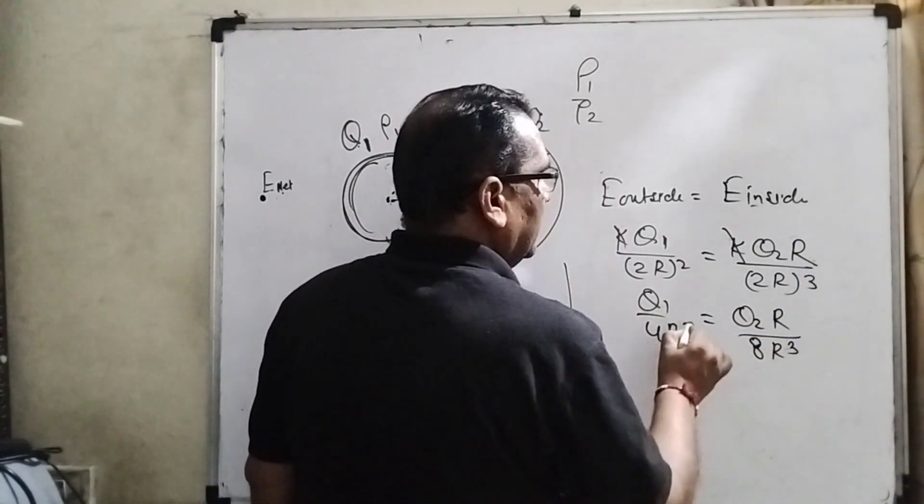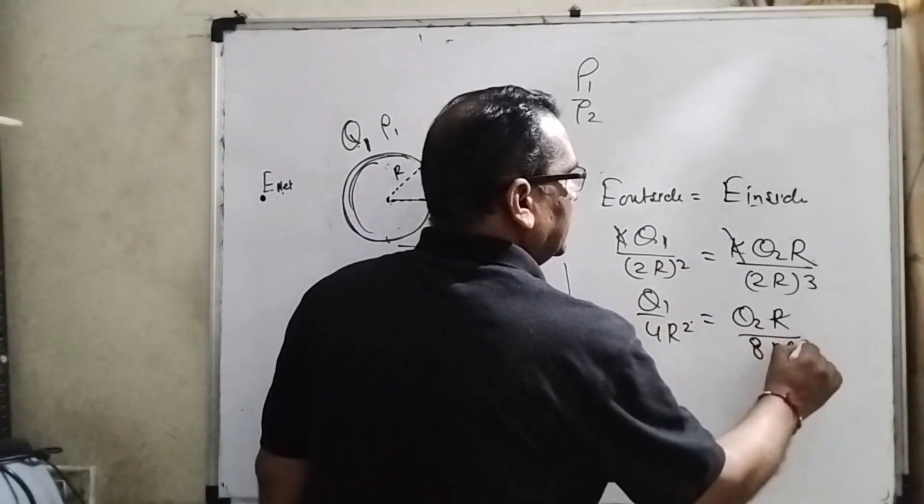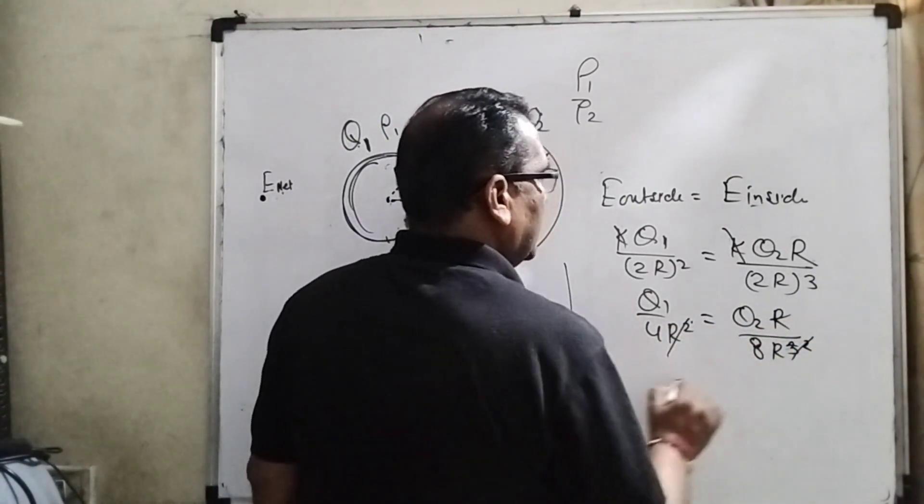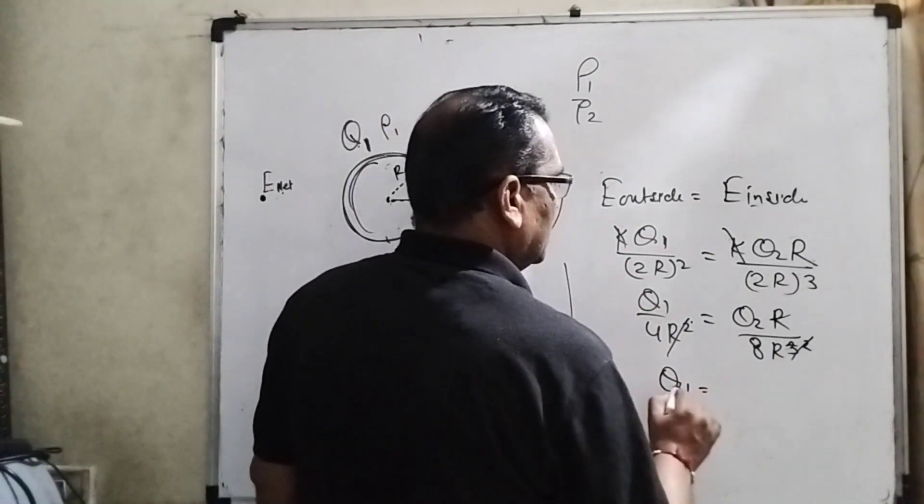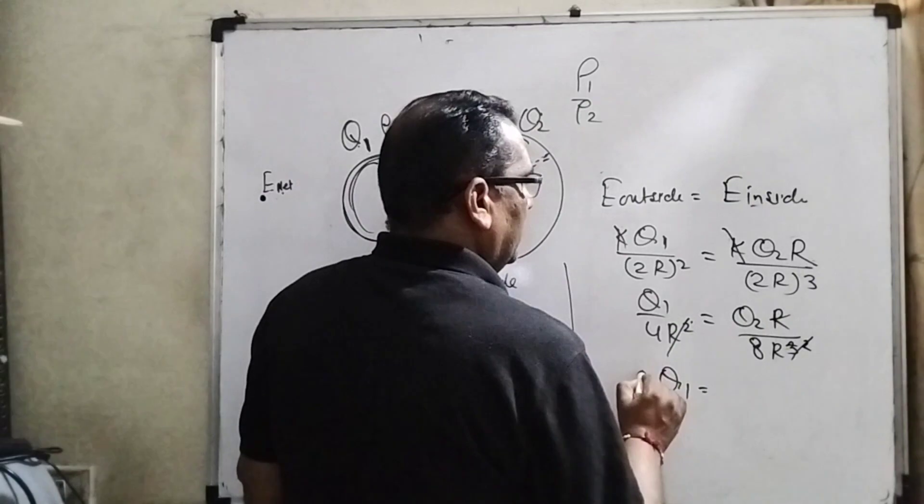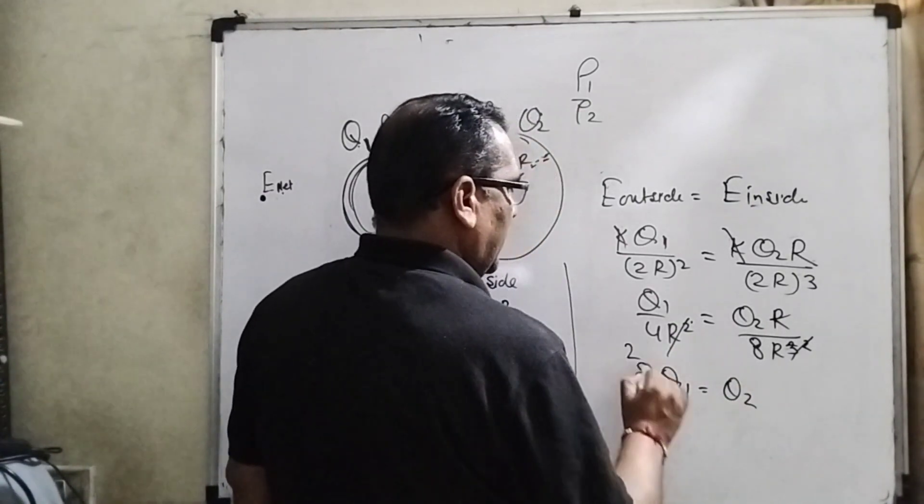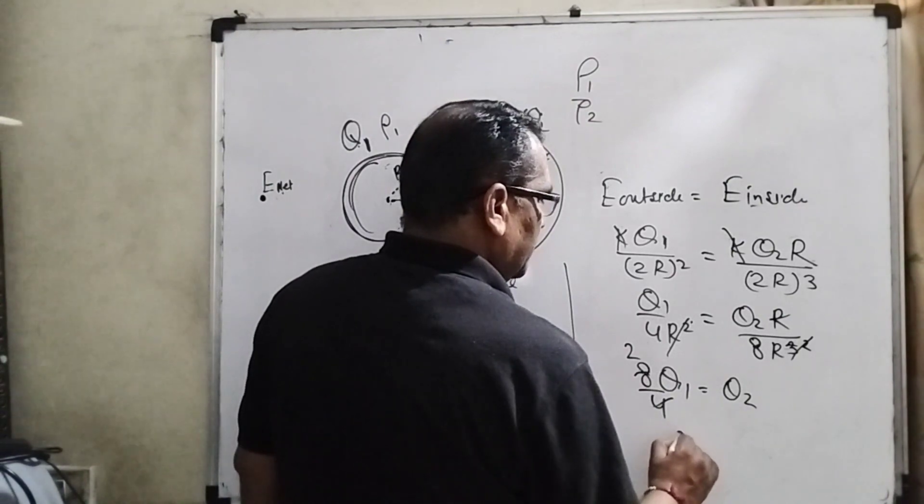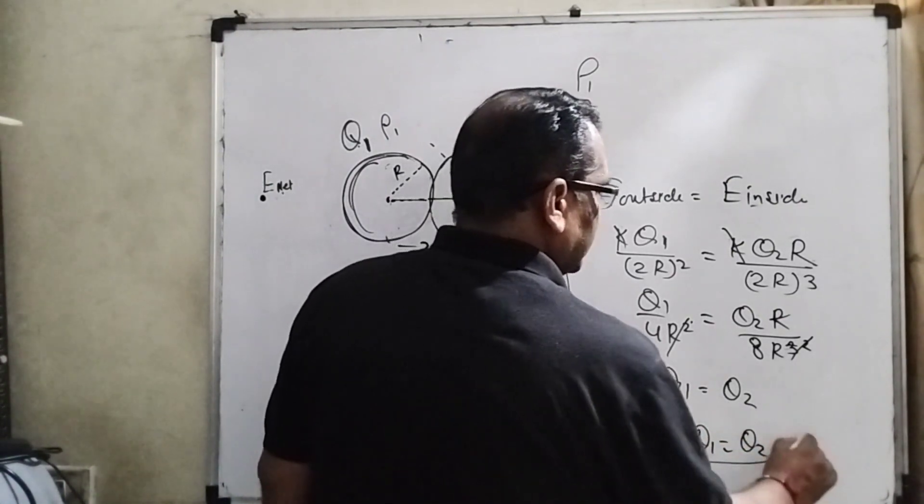Then k cancel, q1 over 4r square and q2 r over 8r cubed. Then this 1 over r and r square, r square cancel out. Then q1 equal to 2 q2.